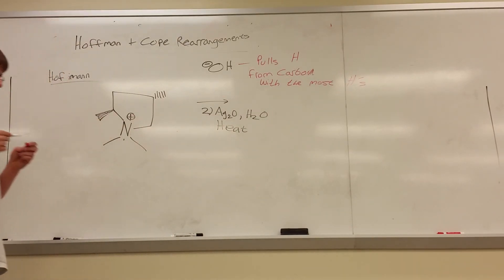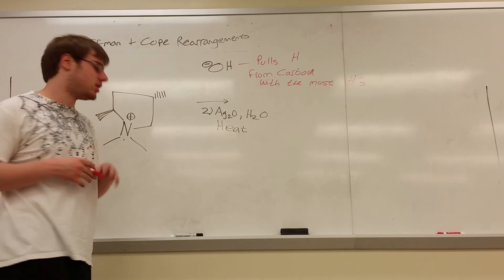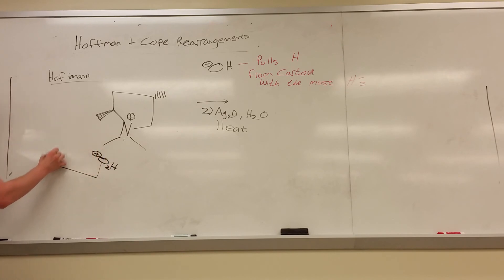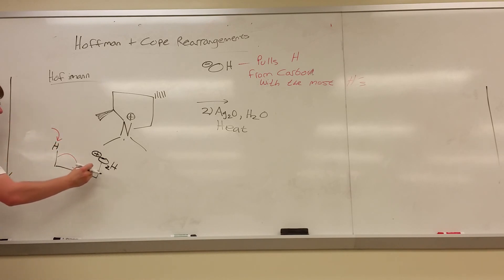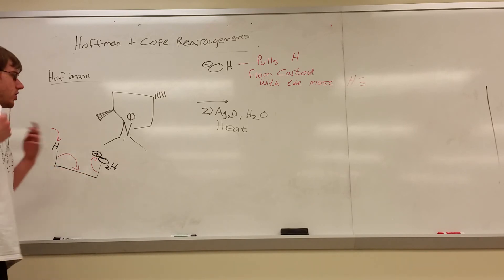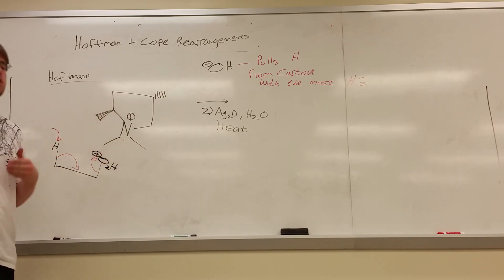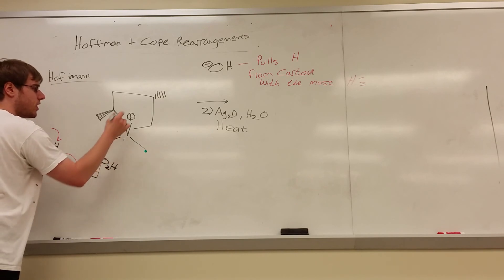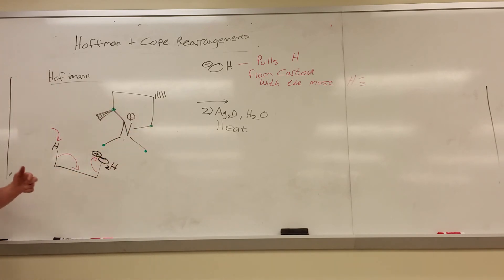Let's compare this to old Orgo 1 elimination reactions. We had on one carbon a good leaving group — for example H₂O⁺ — and on the other carbon the hydrogen that got pulled off by some base to do an elimination reaction, forming a double bond. Our goal is to make a carbon-carbon double bond. So looking at this structure, first look at the carbons attached to our good leaving group. The positive nitrogen is the leaving group because it wants electrons. That means we have four carbons directly attached to the nitrogen to consider — equivalent to the carbon bearing the leaving group in a standard elimination.